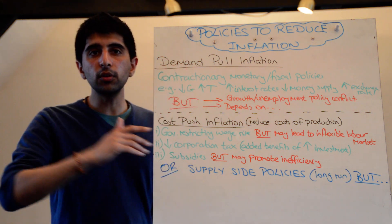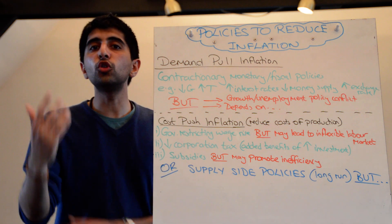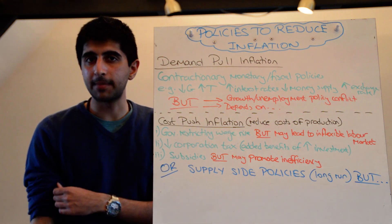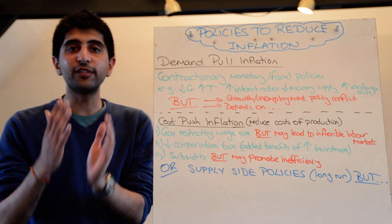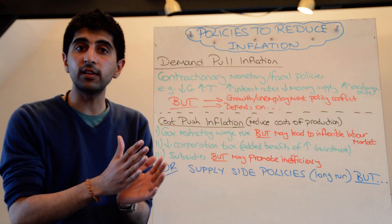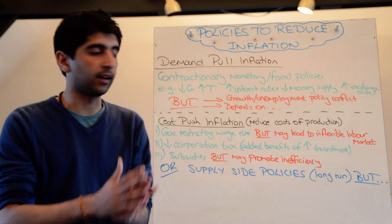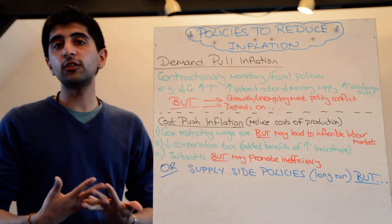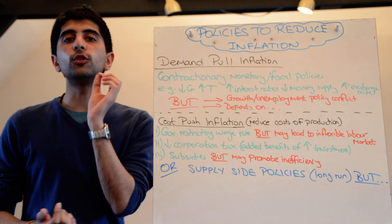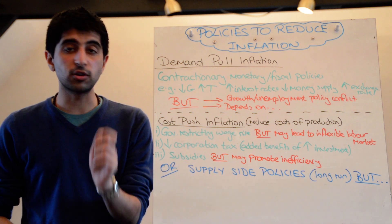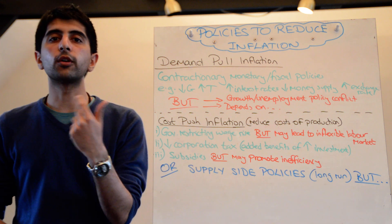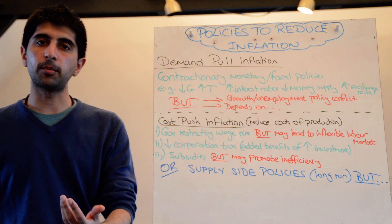If it's demand-pull, basically there is too much aggregate demand in the economy. So the government needs to find a way to reduce the level of aggregate demand. The easiest way to do it is to use contractionary policies — contractionary monetary or contractionary fiscal policies.